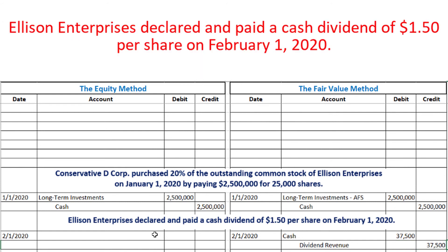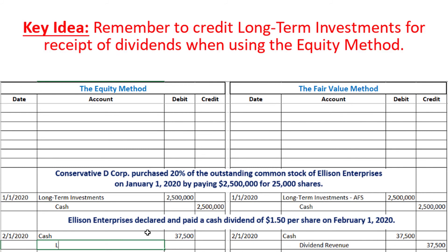For the equity method we still debit cash for 37,500 dollars, but classifying this as dividend revenue would not be quite correct given such a high percentage of ownership. Using dividend revenue would be sort of like paying money to ourselves and classifying it as revenue. Instead, we view this transaction as a conversion from long-term investments into cash, so we credit the long-term investments account also for 37,500 dollars.